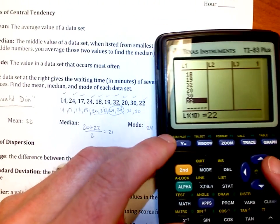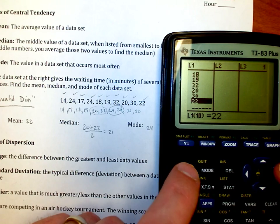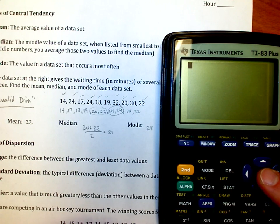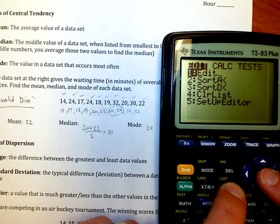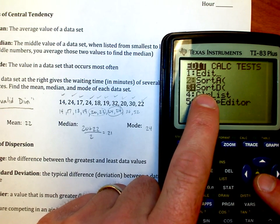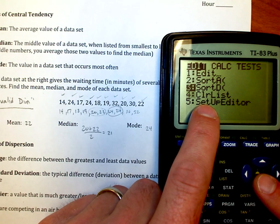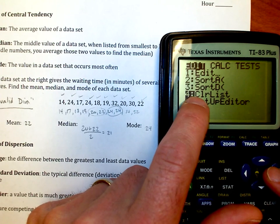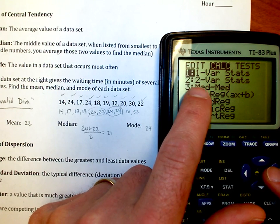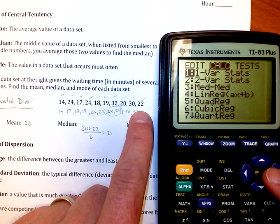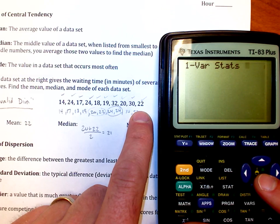Now in order to do stuff with this, I'm done entering information in. I'm going to hit second and then quit out of the menu. I'm going to go back to my main screen. Now I'm going to go back in the statistics menu. This time, instead of editing, I just want to do some calculations with them. I have one variable. I'm going to hit enter.